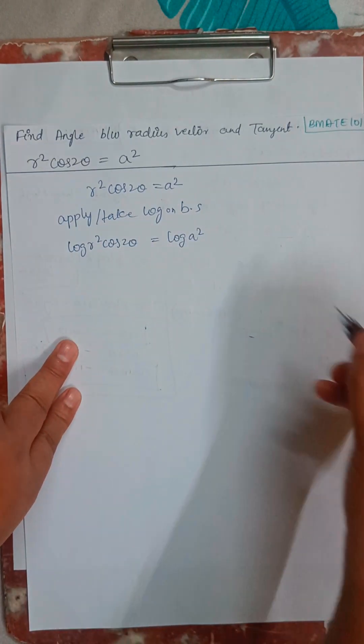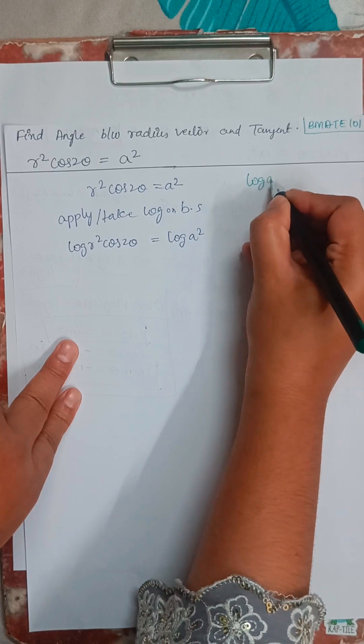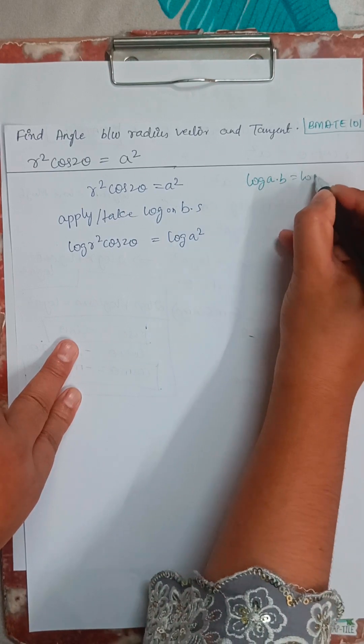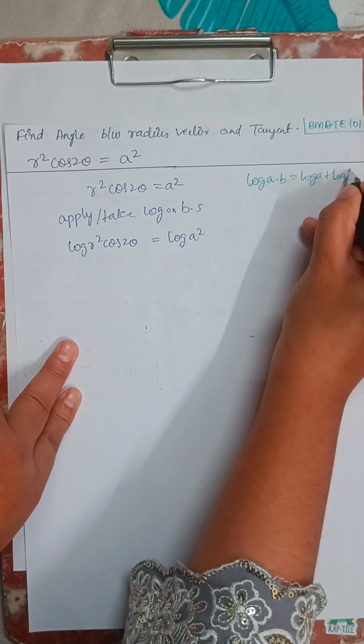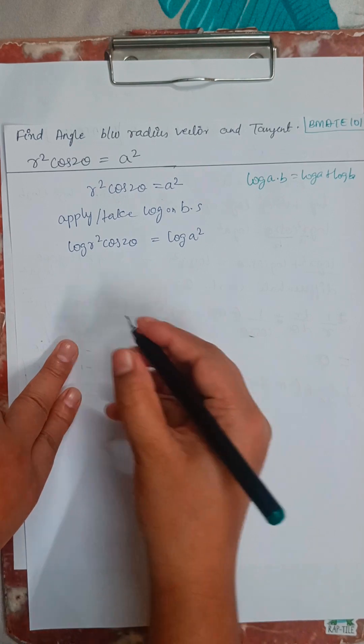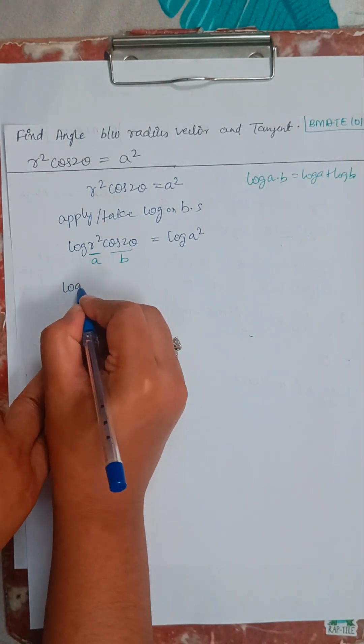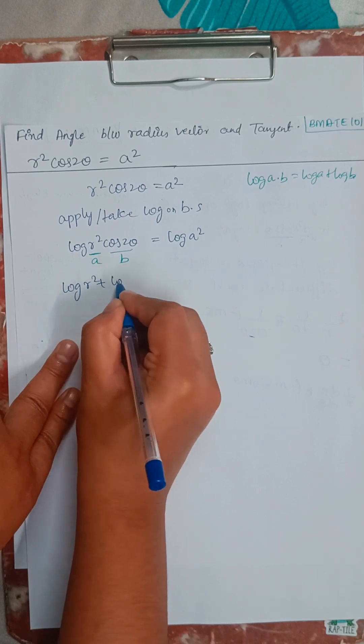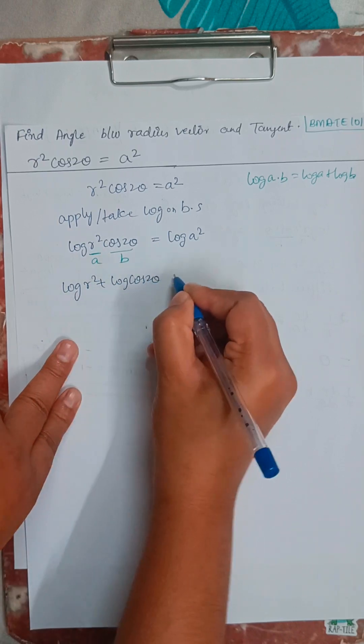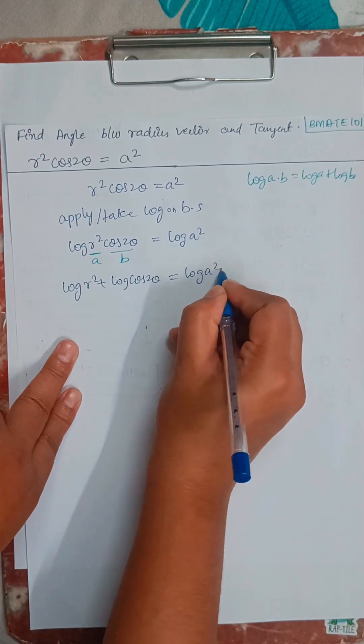And if you remember log a times b formula, that is going to be log a plus log b. So this one is a, this is b. So I will take log r squared plus log cos 2 theta equals log a squared.